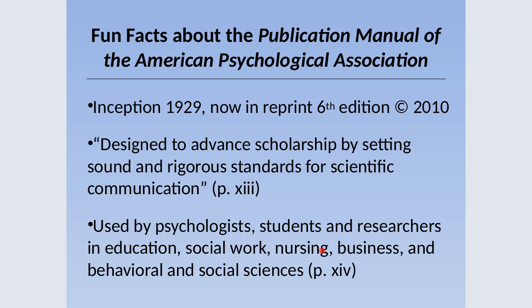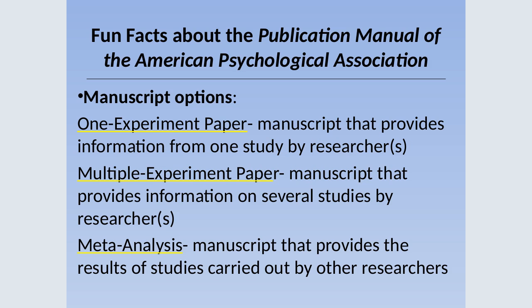Here are some fun facts about the APA publication manual, which dates back to 1929 and is now in the sixth edition, copyright 2010. People mainly using APA include psychologists, students and researchers in education, social work, nursing, business, and the behavioral and social sciences. Multiple ways to do an APA paper could be based on one experiment, multiple experiments, or pulling from research already done and placing them together — that would be considered a meta-analysis.